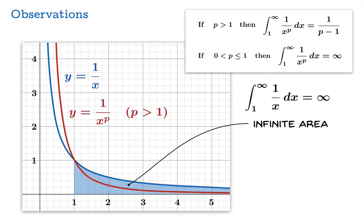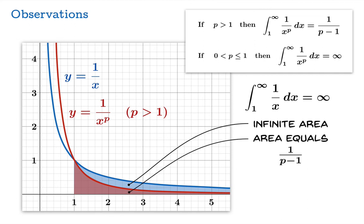When p is greater than 1, the graph dips below the reciprocal case. In this case, the area is finite — equal to 1 over p minus 1. This new area is enclosed within something that's infinite, so it doesn't have to be infinite as well — and indeed it's finite.